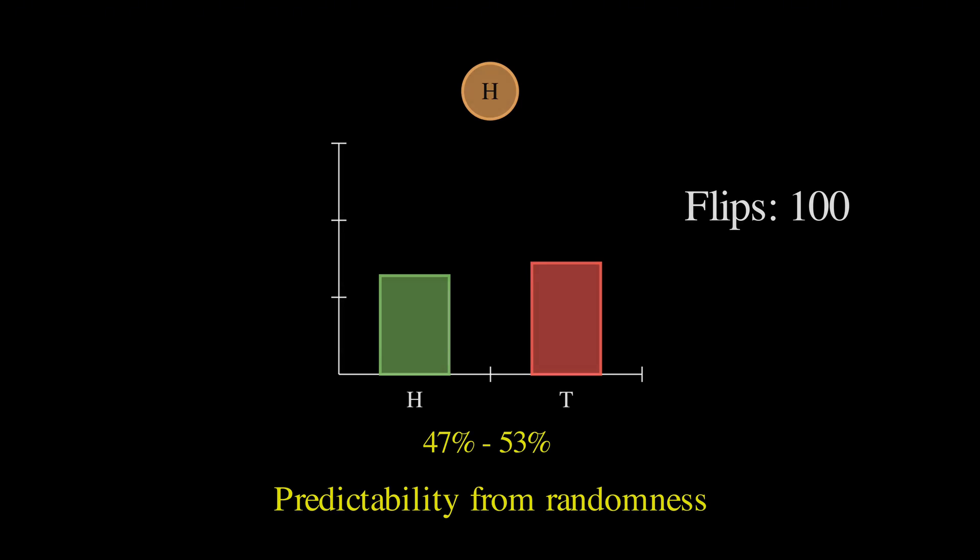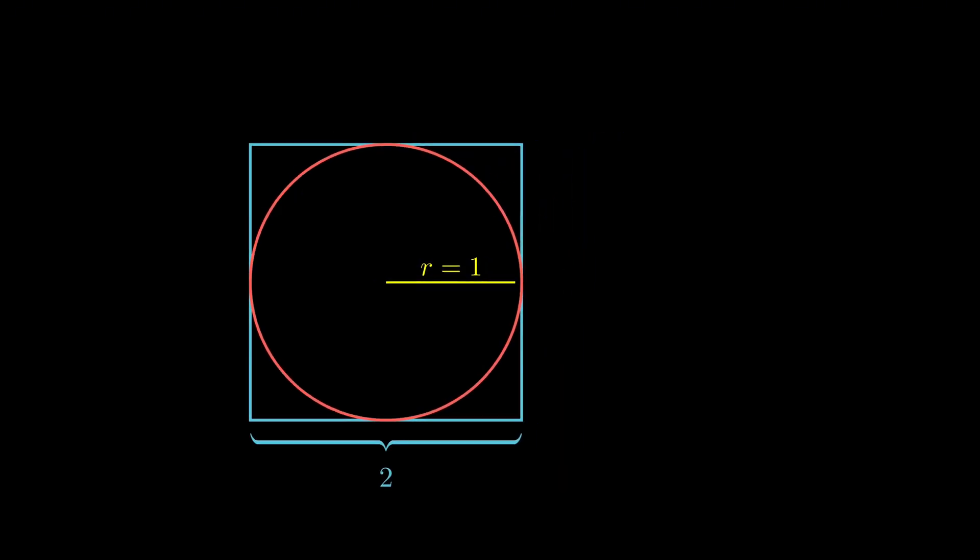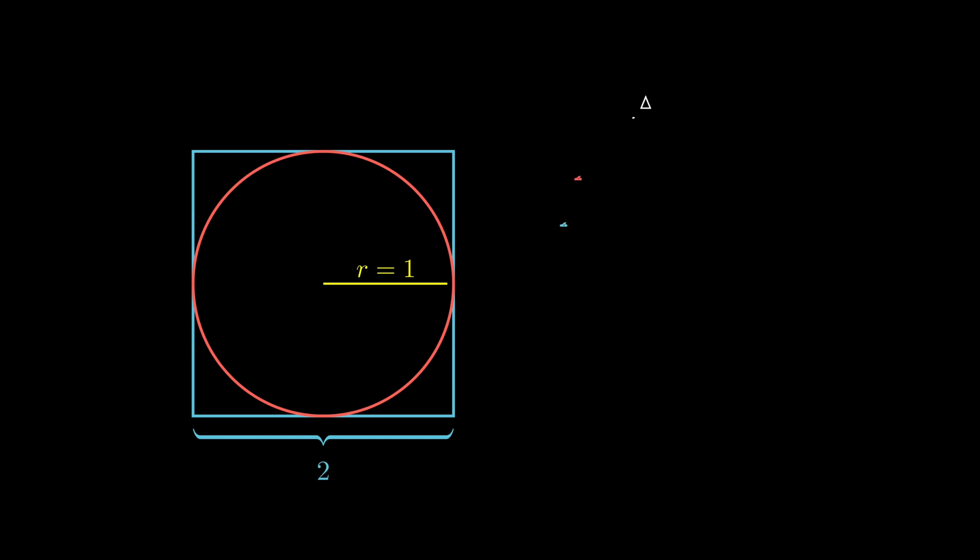Let me show you how this works with our dart throwing example. We have a square with sides of length 2 and a circle inside with radius 1, which means the area of the circle is pi times r squared, which equals pi, and the area of the square is 2 times 2, which equals 4. Now here's where it gets clever.